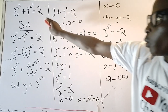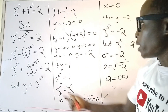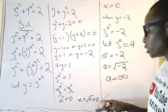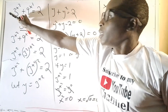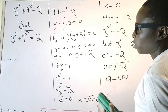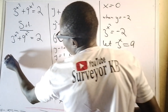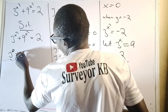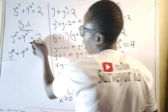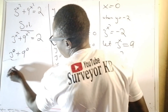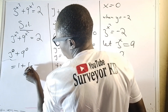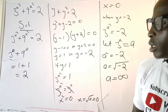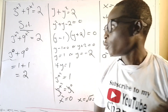Therefore this equation has only one solution, which is x equals 0. Let's verify: if x equals 0, then x squared equals 0, so we compute 3 raised to the power 0 plus 9 raised to the power 0, which is 1 plus 1, which equals 2. This matches the right-hand side, confirming that x equals 0 is correct and the only solution.